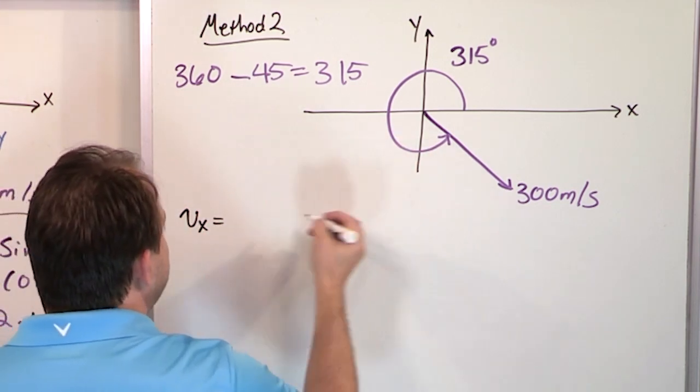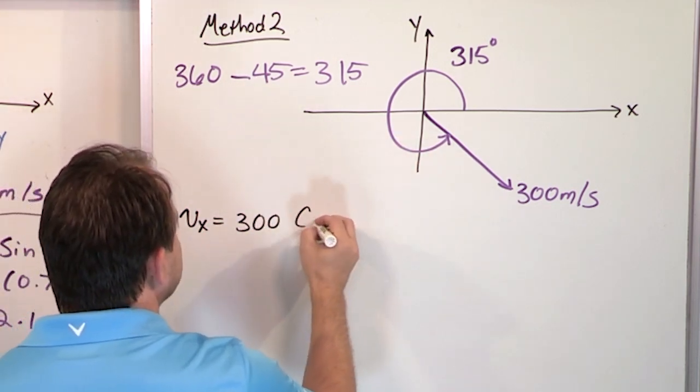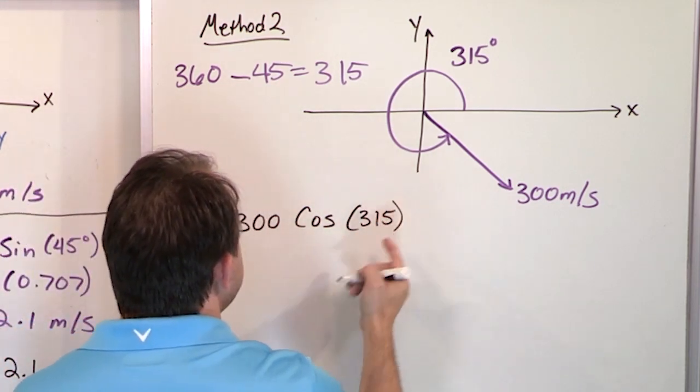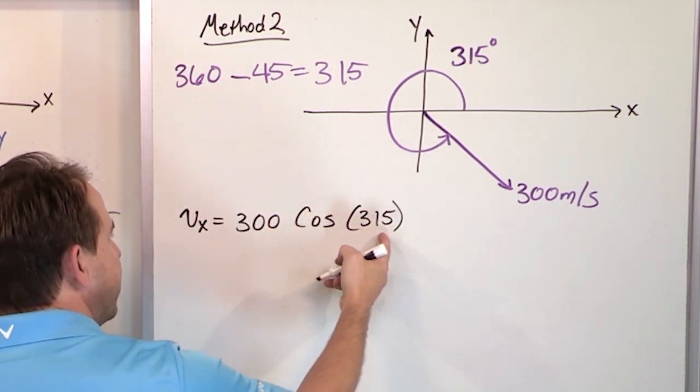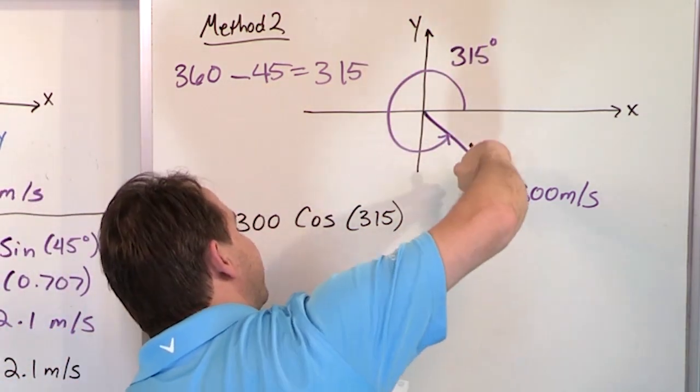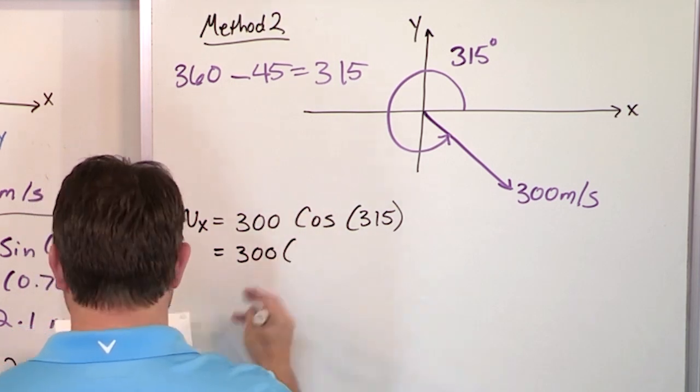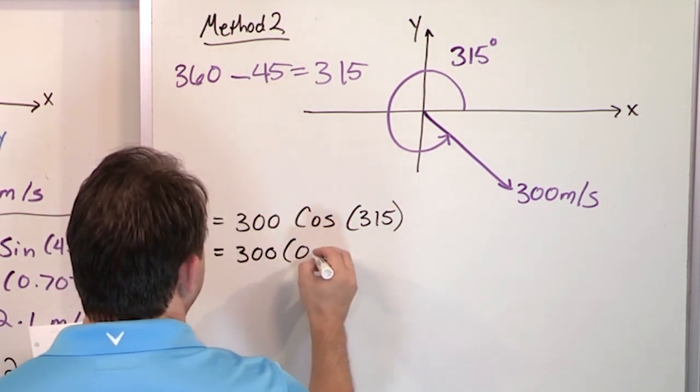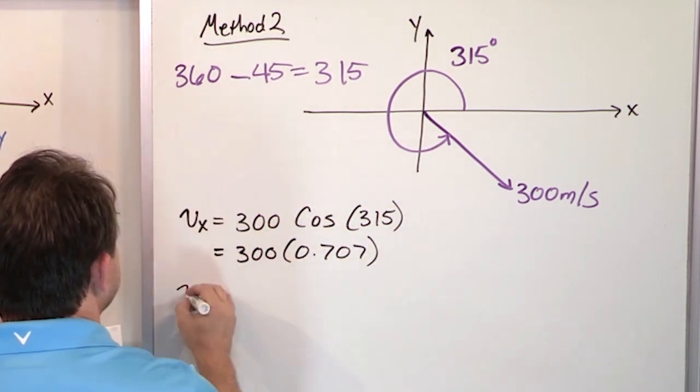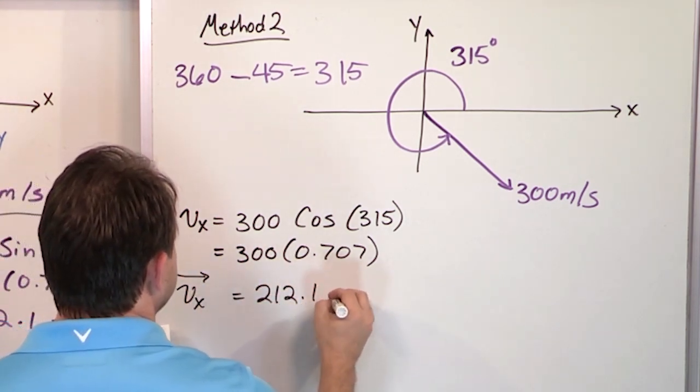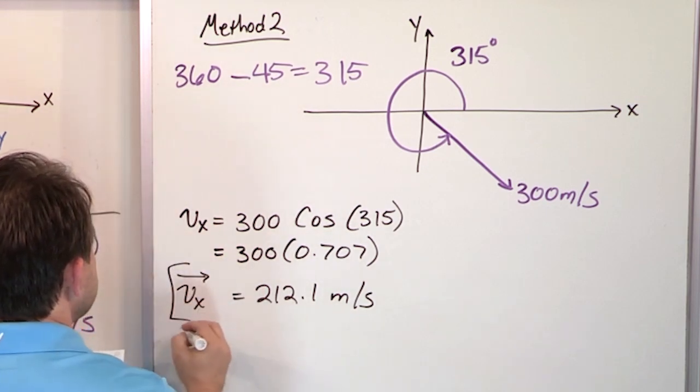The Vx is going to be equal to the hypotenuse, 300 times cosine, because cosine goes with chopping to x, 315. When you put this in, the calculator knows 315 means you're all the way around over here. So we expect it to give us the correct sign. So you get 300. And then what you're going to get is 0.707. And so Vx, you're going to get 212.1 meters per second. Not a big surprise.